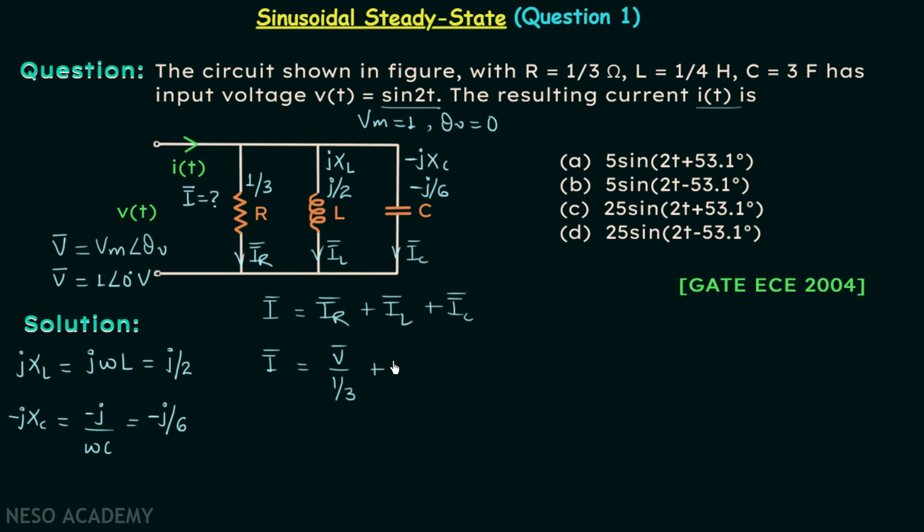In place of IL phasor we can have V phasor divided by j/2. And in place of IC phasor we will have V phasor divided by -j/6.